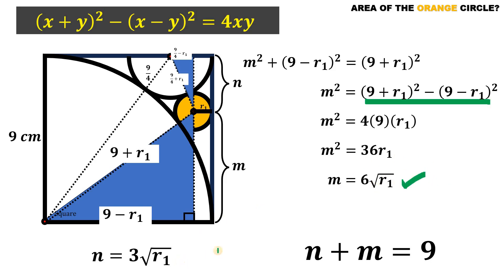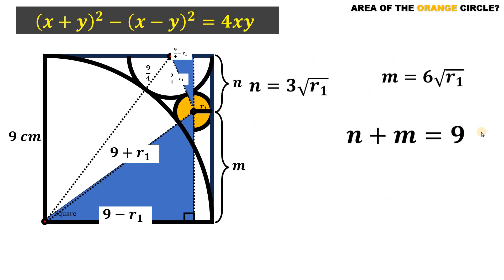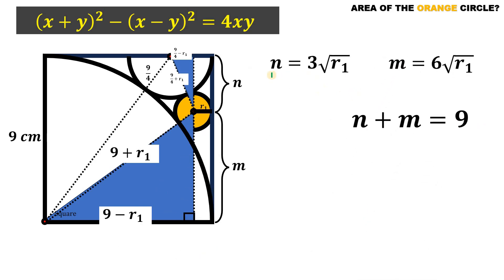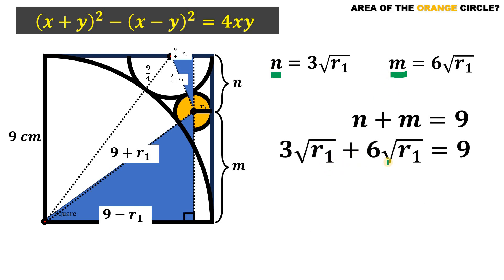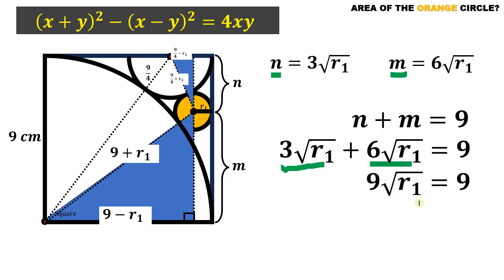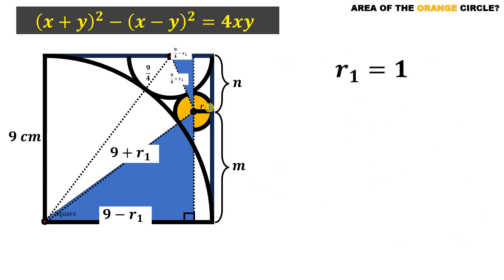Now we have both M and N, and we know N + M = 9. Substituting: 3√R₁ + 6√R₁ = 9, which combines to 9√R₁ = 9. Dividing both sides by 9 gives √R₁ = 1. Squaring both sides gives R₁ = 1. Therefore, the radius of this orange circle is simply 1 centimeter.